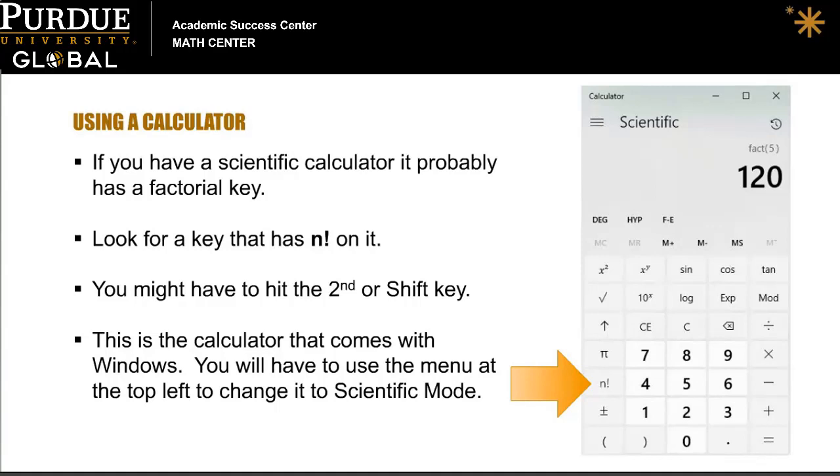If you have a scientific calculator, it probably has a factorial key. Look for a key that has N exclamation point on it. You might have to hit the second or shift key to find it.